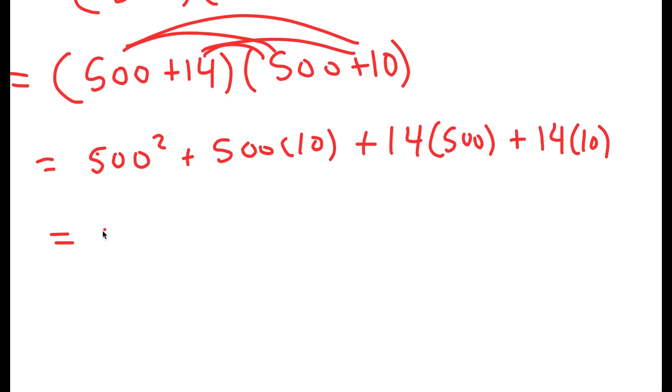Now, 500 squared, that's going to equal 250,000. 500 times 10 is 5,000. 14 times 500 is 7,500. And finally, 14 times 10 is 140.